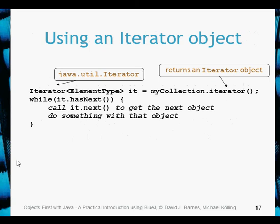Here's an example of using an iterator. We effectively create our iterator object - most of the time we call it 'it'. We create our iterator object and specify what type of element we're going to be encountering. For us, we're going to be encountering tracks. We then use the collection we're working with and call the iterator method of that collection, and that will return our iterator object.